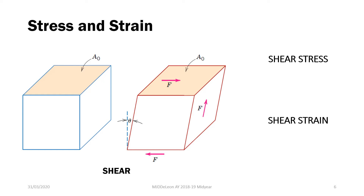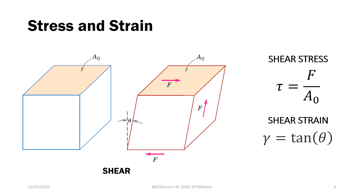If we now consider the application of a shear stress into a material, the application of the force is parallel to the plane of contact. In tensile and compressive stresses, the force is perpendicular to the object. Now, when shear is the application, the forces are parallel to the surface area. For shear stresses, the formula is the same: tau equals F over A₀. We denote shear stress as the Greek letter tau, where F is the force parallel to area A₀. The shear strain is gamma, where gamma equals the tangent of the angle of deformation, delta.